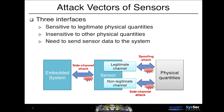Let's think about the attack vectors of sensors. Sensors have to be sensitive to legitimate physical quantities. Therefore, if you understand the detailed mechanism behind the design of sensors, one may launch a spoofing attack on this legitimate channel. Also, a sensor has to be insensitive to other physical quantities it is not designed to detect — we call this a side-channel attack on a non-legitimate channel.